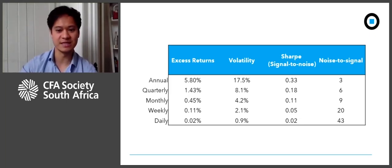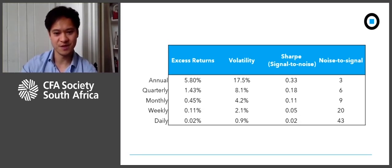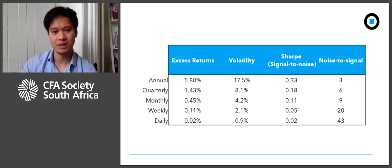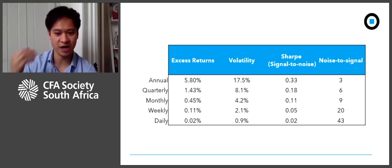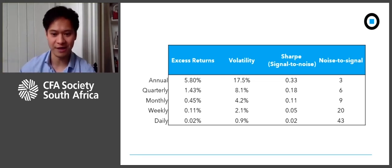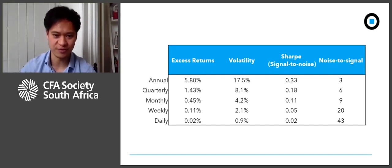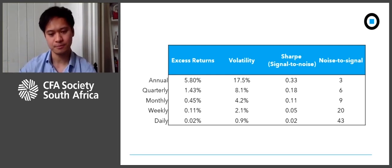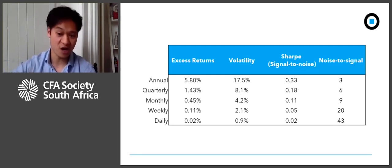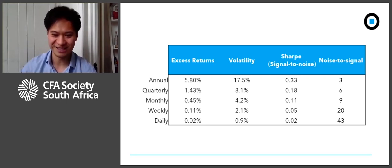What I show here are global equity market returns going back 30 years measured on different frequencies. The first column is the average return in excess of cash — 5.8% on an annual basis down to about two basis points daily. This is the signal we're looking for. The second column is the volatility across different frequencies — this is the noise we need to see the signal through. The third column is the Sharpe ratio: the average excess return divided by the volatility around that average. This is the signal-to-noise ratio. All of these Sharpe ratios — these signal-to-noise ratios — are below one. The final column inverts the Sharpe ratio for reference in the next few slides: this is how much noisy data we have for every one piece of good data.